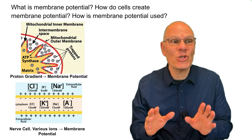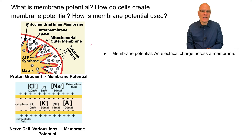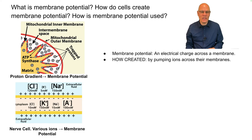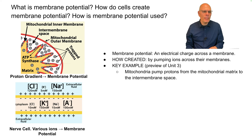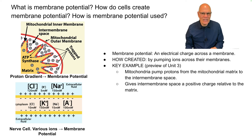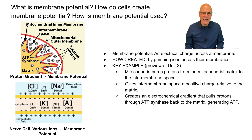Membrane potential is an electrical charge across a membrane that creates a voltage difference. It's created by cells expending energy to pump ions across their membranes. A key example: mitochondria pump protons from the mitochondrial matrix to the intermembrane space, giving the intermembrane space a positive charge relative to the matrix. This electrochemical gradient pulls protons back through ATP synthase into the matrix, powering the creation of ATP.